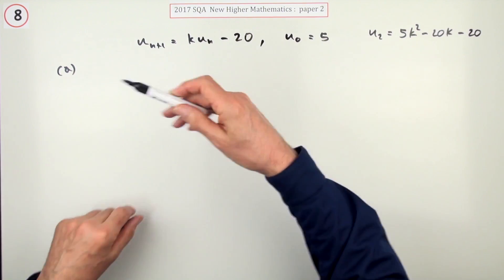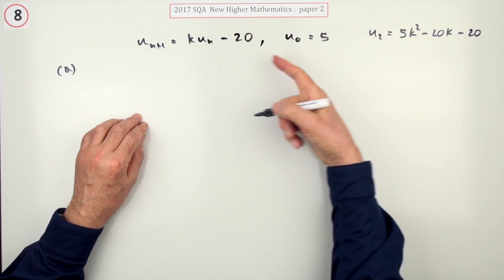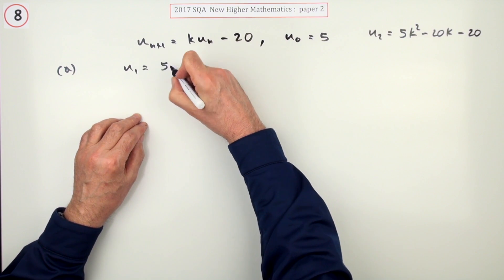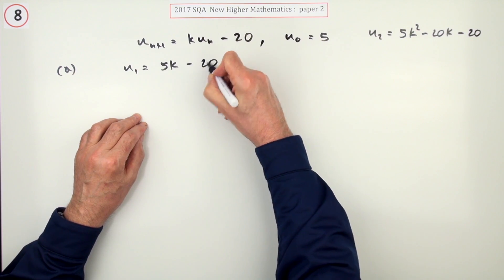Well, you just have to feed it through twice. To find u1, I can find it by feeding it through this, so it'll be multiplied by k, giving me 5k and take away 20.